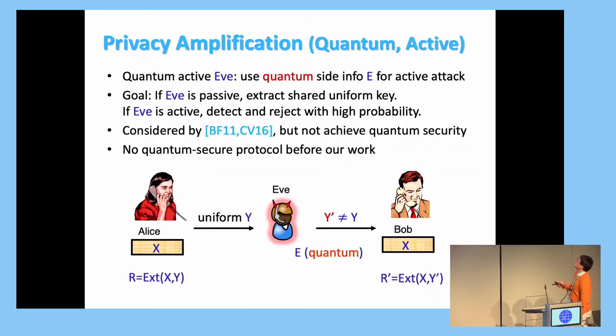And what about the quantum case? Well, the quantum case of active quantum adversary still has the power to change Y to Y'. But now, also, the side information E is the quantum state. And this scenario comes naturally when you try to run some quantum protocol like QKD.